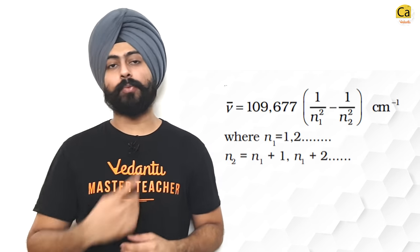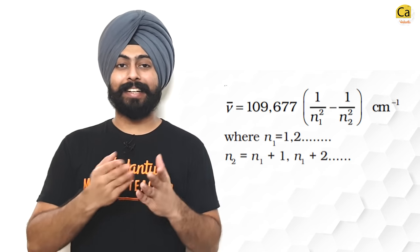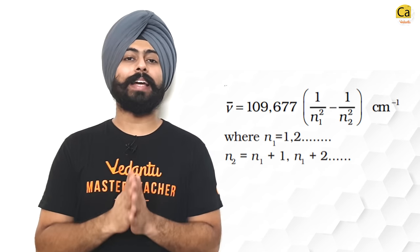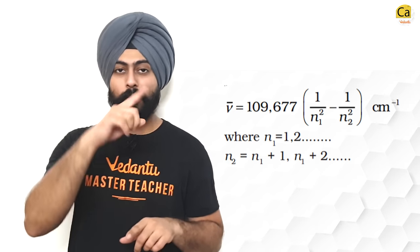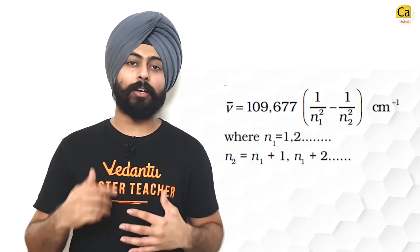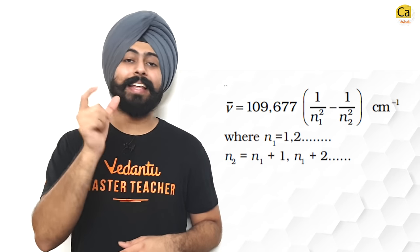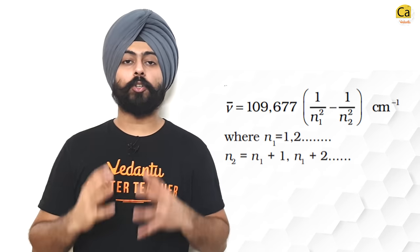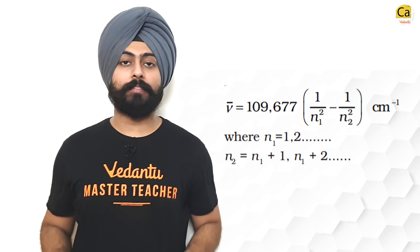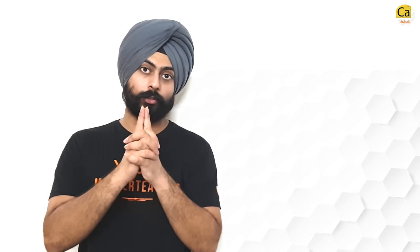This idea was started first by this scientist called Balmer. He gave us a formula for spectral lines of hydrogen in the visible region but eventually Johannes Rydberg made the formula more universal and this is what it is. The wave number of a line in a hydrogen spectrum is equal to 109,677 × (1/n₁² - 1/n₂²) cm⁻¹. This 109,677 cm⁻¹ is known as the Rydberg's constant in terms of wave number. Please make sure you take care of the units.